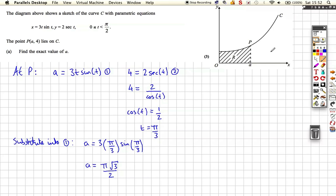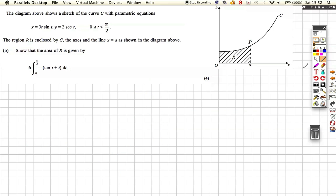Right, so standard 3 marks, that's basic parametric stuff. The next bit asks us to find out, show that the area of R is given by this. So an area under the graph is integration, and we've got to get to this expression here. And this is an expression with dt.